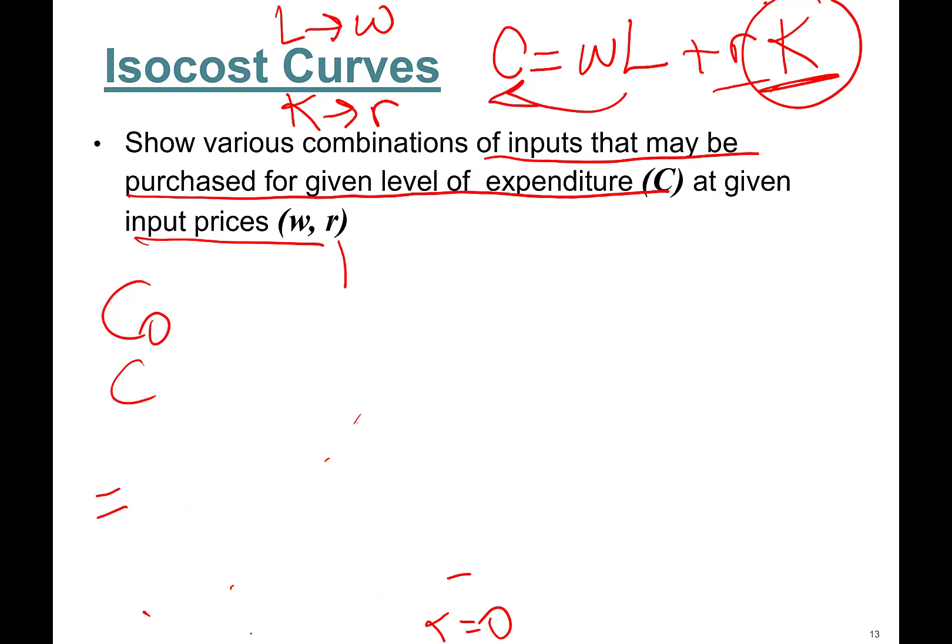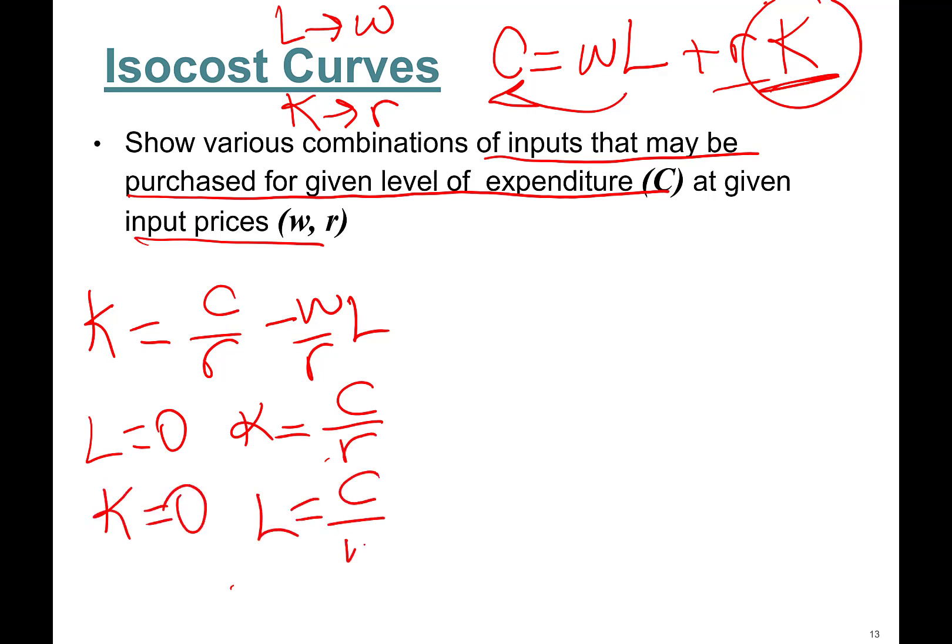All right, I didn't mean to erase everything but it just happened. When it happens, what can we do? We'll do it again, it doesn't matter. K equals C over r minus w over r times L. Okay, so L is zero—K is you can hire these many capital. If you hire no capital, you can spend all your money on hiring labor. So it looks like this folks: you have capital here, labor here. It's going to be a line like this. This intercept will be C over w. This will be total cost over rental rate.